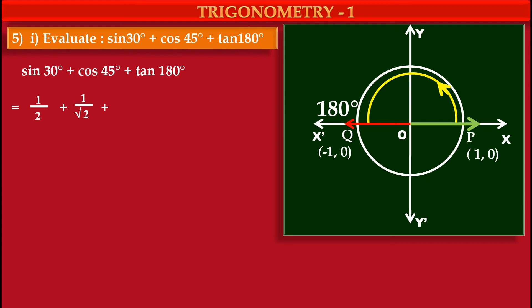That means sin 180° is 0 and cos 180° is minus 1. Sin 180° is 0 and cos 180° is minus 1. And so we can say value of tan 180°, which is ratio of sin and cos, so value of tan 180° is 0 upon minus 1, that is 0.